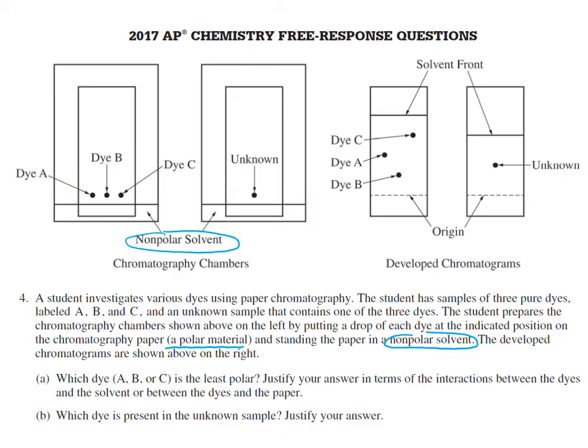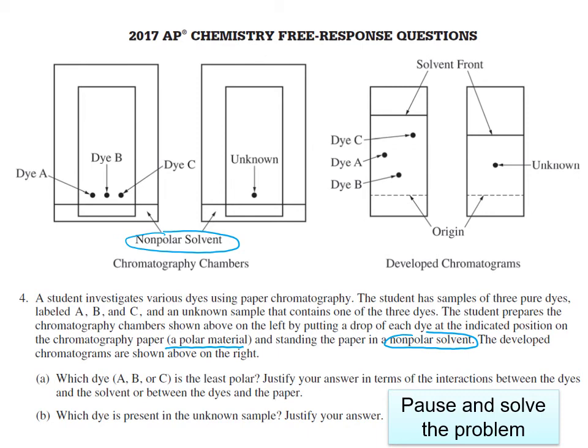The first question asks: which dye — A, B, or C — is the least polar? Justify your answer in terms of the interactions between the dyes. Part B asks: which dye is present in the unknown sample? Justify your answer. Pause the video and solve the problem, then restart to check your answers.